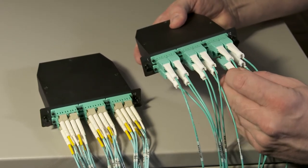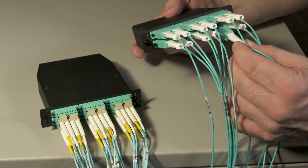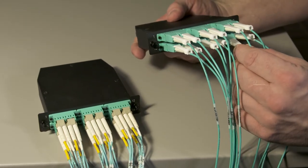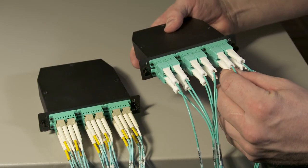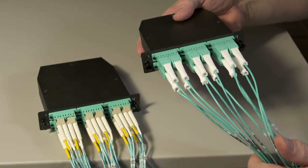Once again, just pull on the tab, it releases the LC from the cassette, and you can re-lock it back in when you want to reinstall the assembly.